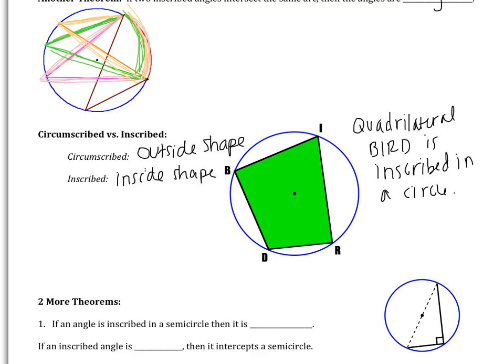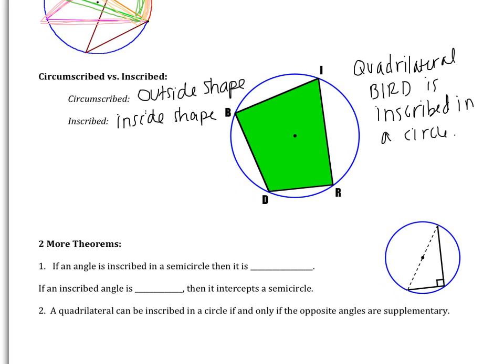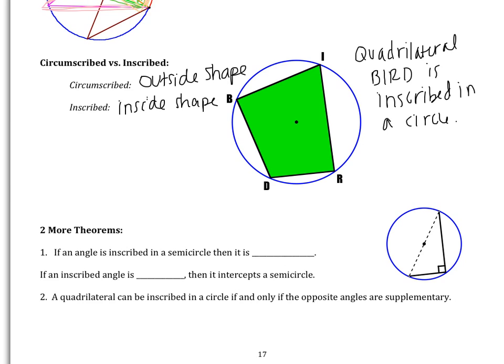When it comes to circumscribed and inscribed, there's two more theorems. The first one says if an angle is inscribed in a semicircle, then it is. Well, looking at the figure, we have this angle here that's inscribed in a semicircle. Because it's inscribed, it's going to be half of the semicircle. So half of 180 is going to be 90. If an angle is inscribed in a semicircle, then it is a right angle. Likewise, if an inscribed angle is right, then it intercepts a semicircle. And that should make sense. Semicircle is 180. If the angle is half of the arc, it has to be half of 180. It has to be right.